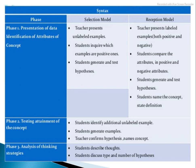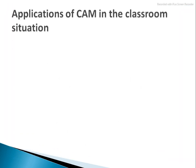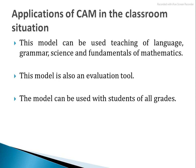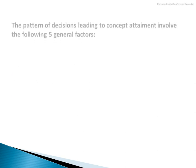In phase 3, analysis of thinking strategy — students describe their thoughts and why they chose these aspects, and students discuss the type and number of hypotheses. The applications of the concept attainment model in the classroom include: grammar — to study English grammar, Punjabi grammar, or Hindi grammar — science, and mathematics. You can choose this model for evaluation, and it can be used with students of all grades.